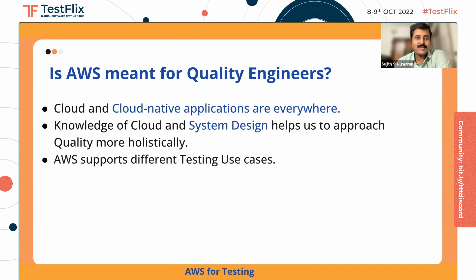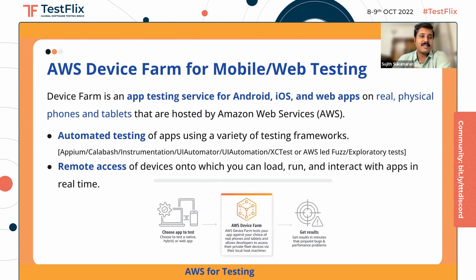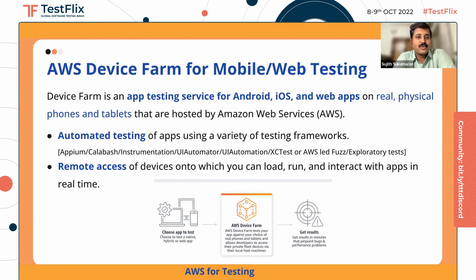Now, going into the use cases. Number one is how we can make use of AWS for mobile and web testing. We have a service called AWS Device Farm, which is a testing service we can use for testing our Android, iOS, and web applications. The important thing is that you get an opportunity to test on an array of actual real physical devices.